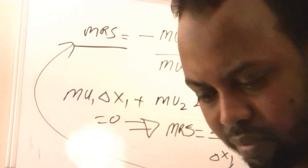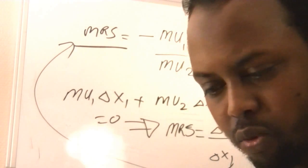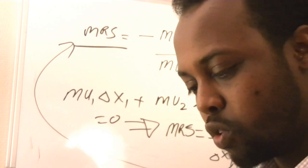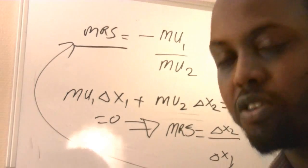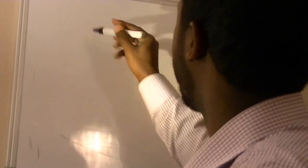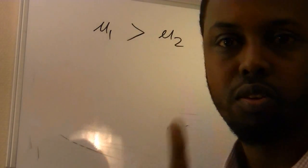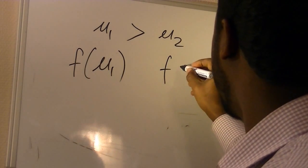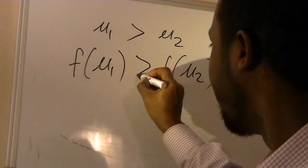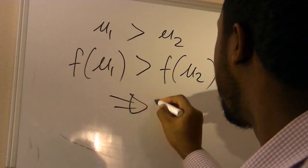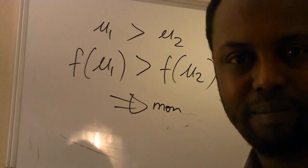Before taking an example, I want to say something about monotonic transformation, since it was part of our definition. A monotonic transformation simply means: if you have two numbers u₁ and u₂ such that u₁ > u₂, and you transform them by a function f, then f(u₁) > f(u₂) — the order of the numbers is preserved. That is called a monotonic transformation.